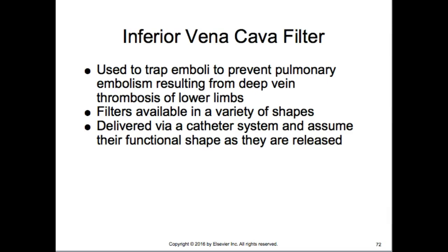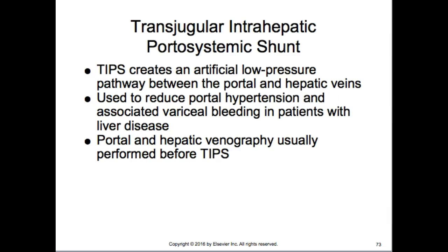The inferior vena cava filter is used to trap emboli and prevent pulmonary embolism resulting from deep vein thrombosis of the lower limbs. As a thrombus travels up toward the heart, the filter breaks it into smaller pieces so the patient won't experience a fatal pulmonary embolism — though they may have shortness of breath. Filters come in different sizes and shapes and are delivered via catheter system. The TIPS procedure creates an artificial low-pressure pathway between the portal and hepatic veins to reduce portal hypertension, commonly in patients with liver failure from alcoholism who develop esophageal varices that rupture and bleed.